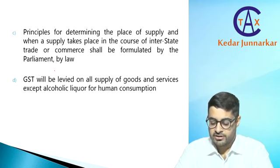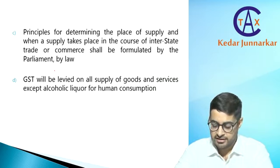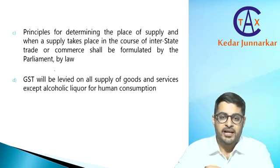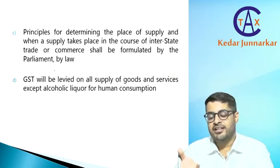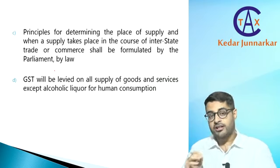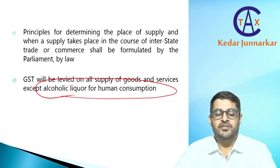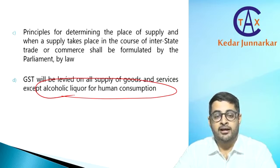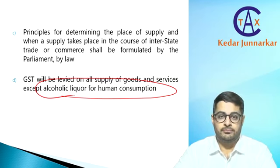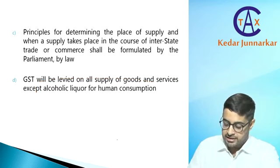We are going to study separately an important chapter on Place of Supply. Based on where the place of supply is, we determine whether a transaction is intra-state or inter-state. GST will be levied on the supply of all goods or services except alcoholic liquor for human consumption. Some students message me showing restaurant invoices where both GST and VAT are charged — which reveals they are consuming alcohol, because that is how a restaurant would charge separately for food under GST and alcohol under VAT.